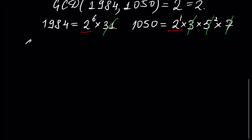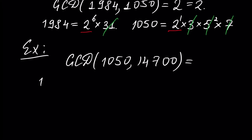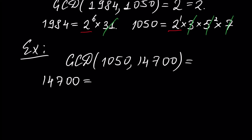Another example: let's find the GCD of numbers 1050 and 14700 using prime number factorization. We already have the factorization for 1050. For 14700, the prime number factorization is two squared times three times five squared times seven squared.